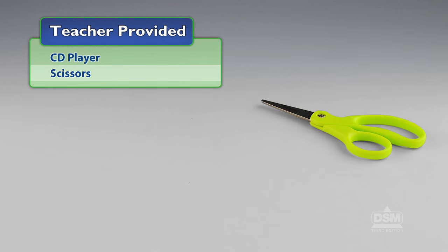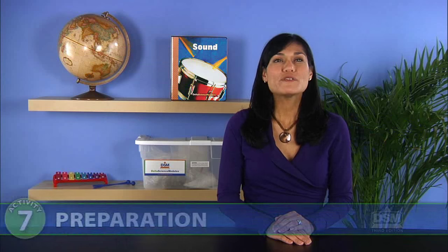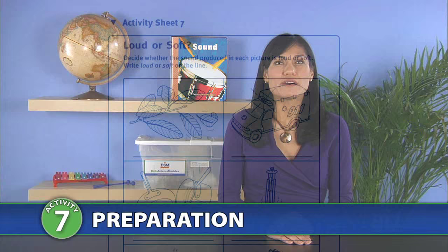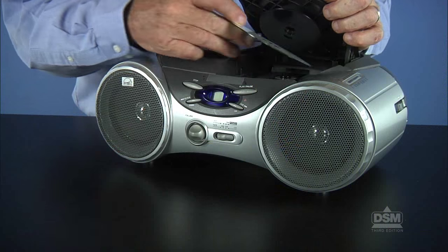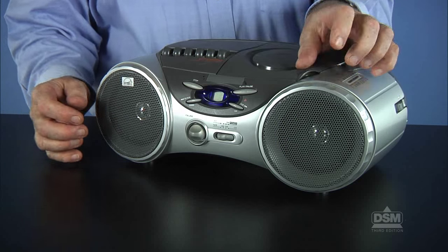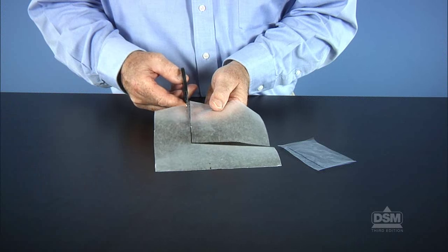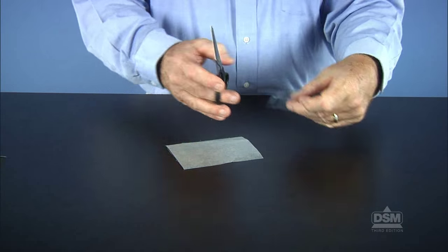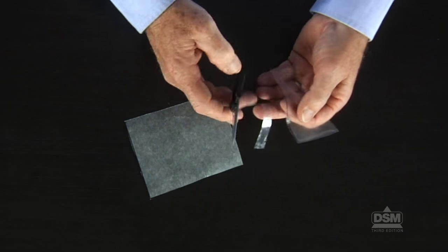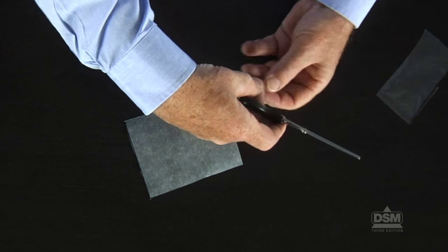You will also need to provide CD Player and Scissors. To prepare for the activity, make a copy of Activity Sheet 7 for each student. Set the CD in the CD Player, ready to play at Section 2. Cut a piece of waxed paper 8 cm by 12 cm and a piece of plastic 1.2 cm by 10 cm for each student.